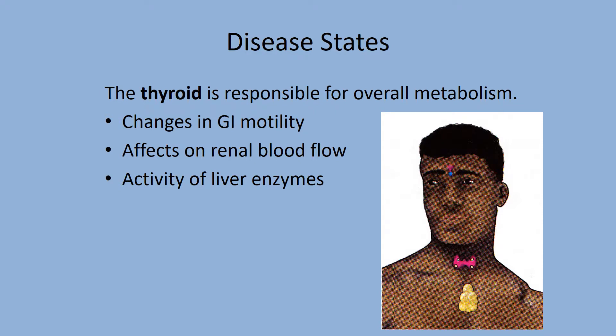The thyroid produces thyroid hormone, which regulates overall metabolism. Changes in thyroid function change GI motility. If you have increased motility, that's going to lead to low absorption. If you have a slower metabolism, there's more time for your intestines to absorb the drug.